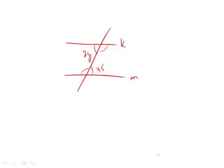because again, the lines are parallel, these two acute angles will equal each other. 2y is equal to 35.